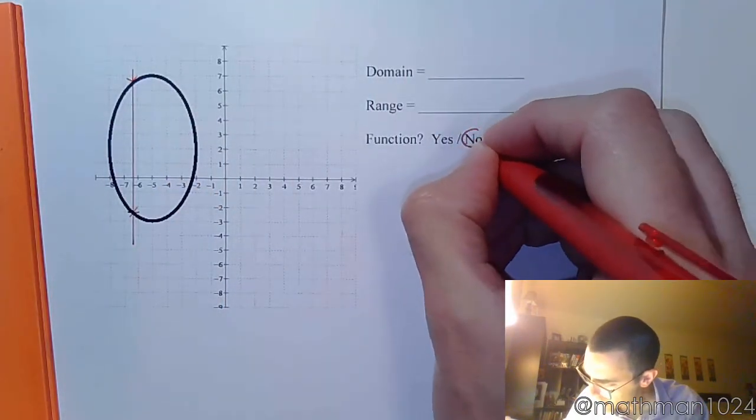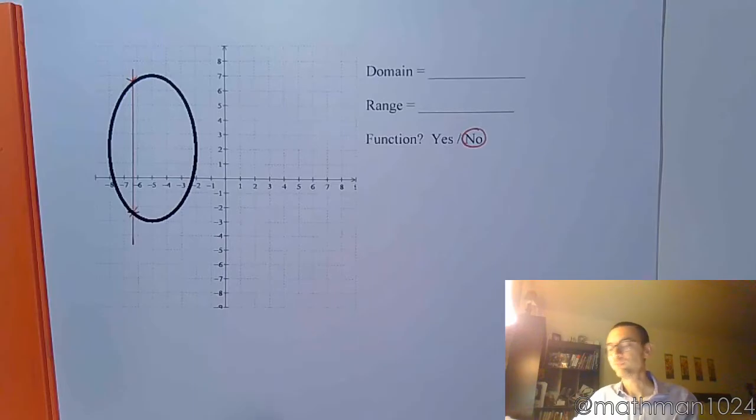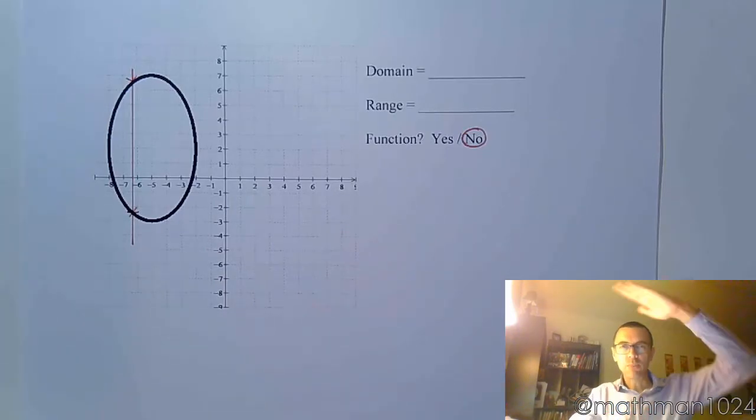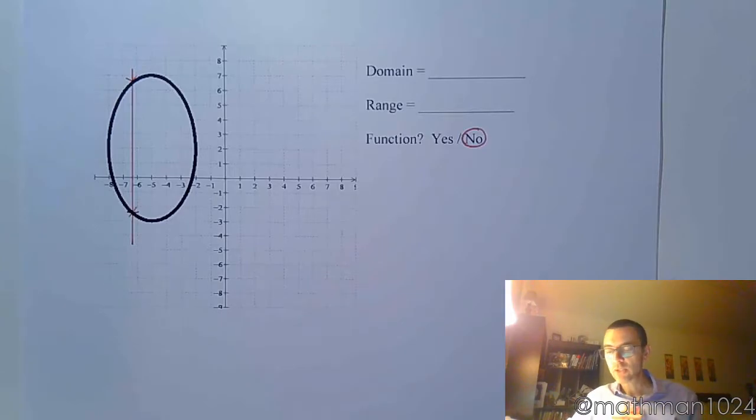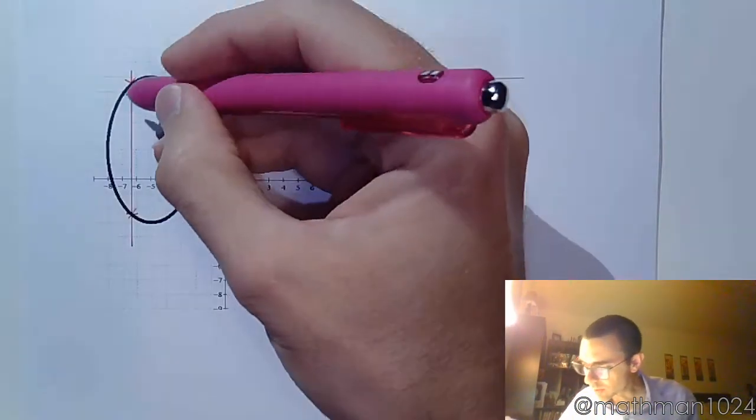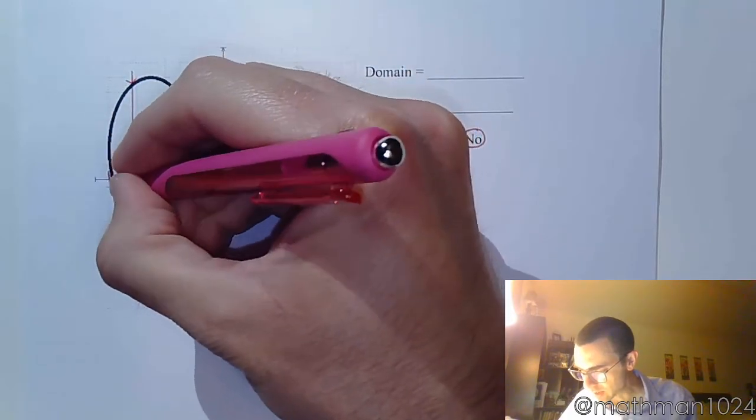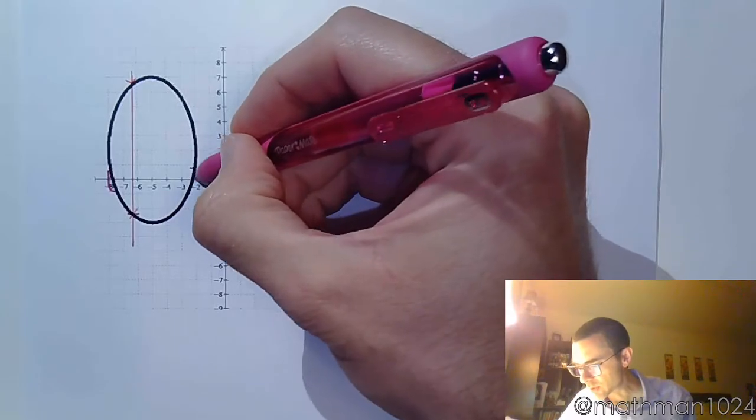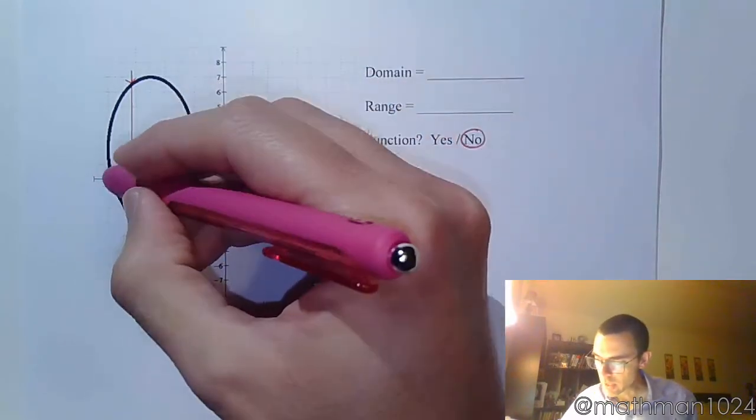All right, but let's talk about domain and range. So here's what I want you to do: if you can imagine that you're kind of compressing everything to the x-axis, what would you be touching? And it's not where do we cross the x-axis, because that means nothing to us - it's about the values of x that we use. So notice that the furthest to the left this guy gets is negative eight, and then he goes up, comes back down, and the furthest to the right he gets is negative two.